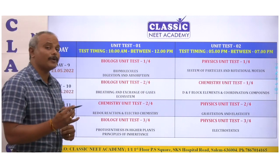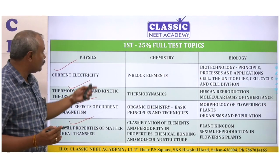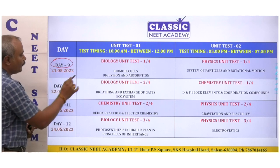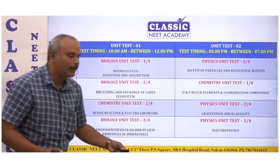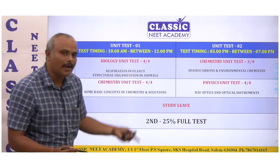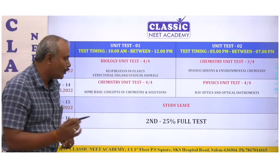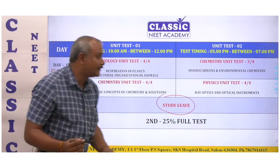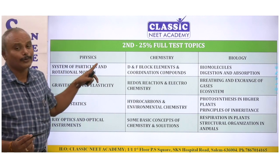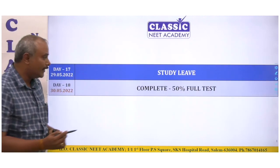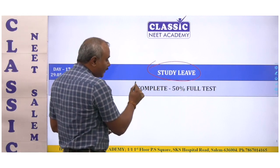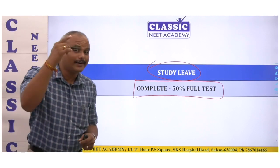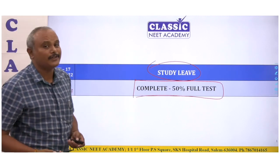Next cycle, the next 25% portion — the second 25% test starts from day 9, that is 21-5-2022, covering the same subjects: physics, chemistry, biology, with 4 tests. After studying the second 25%, you will have a complete 50% full test.